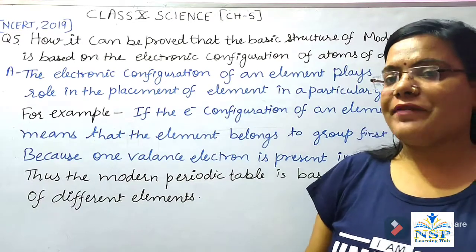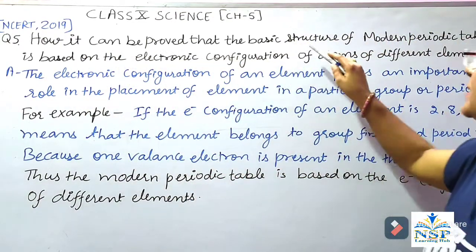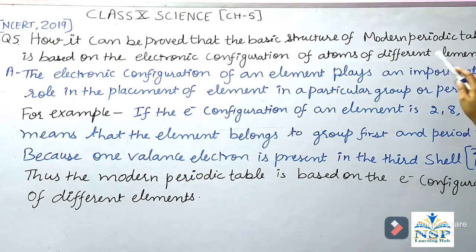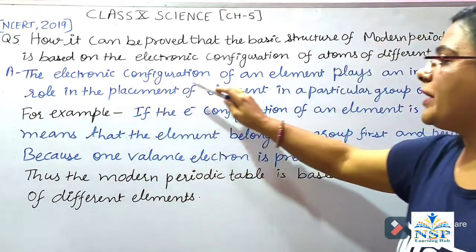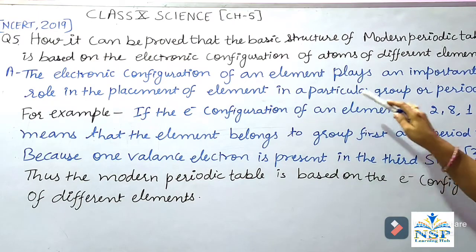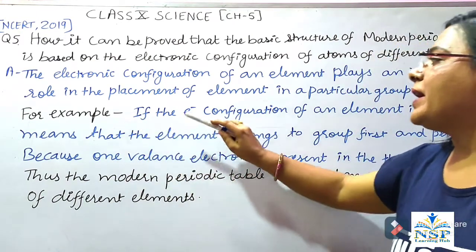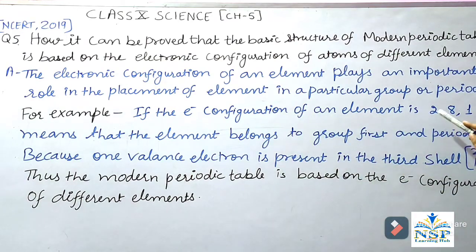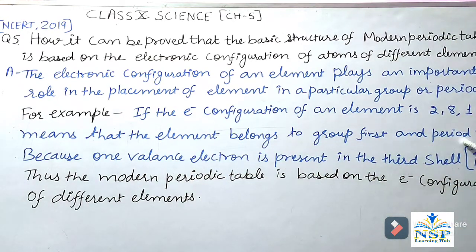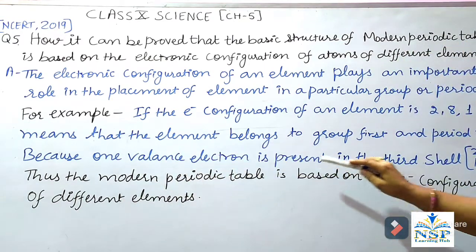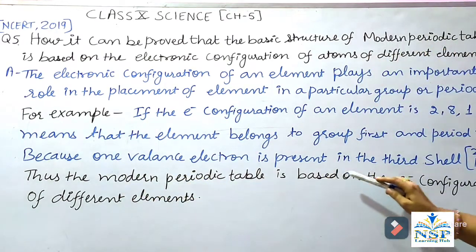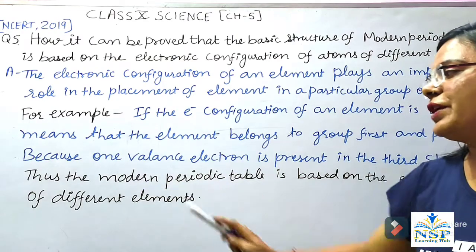Question No. 5: How can it be proved that the basic structure of the Modern Periodic Table is based on electronic configuration of atoms? The electronic configuration of an element plays an important role in the placement of an element in a particular group or period. For example, if the electronic configuration of an element is 2, 8, 1, it means the element belongs to Group 1 and Period 3, because one valence electron is present in the 3rd shell, which is the M shell. Thus, the Modern Periodic Table is based on the electronic configuration of different elements.